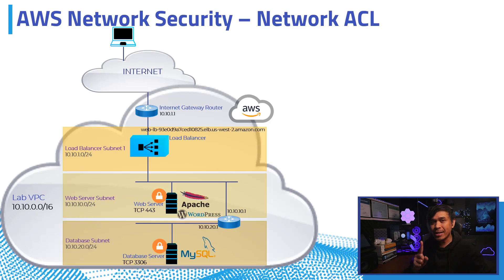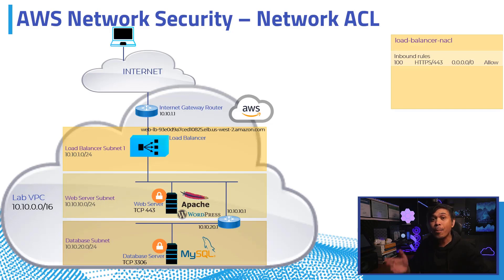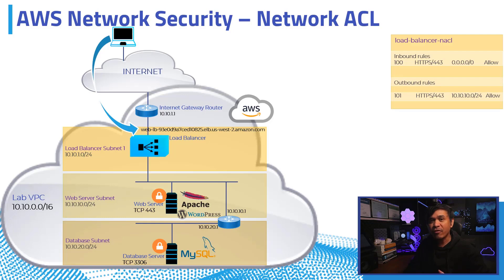The first is the Load Balancer NACL, applied to Load Balancer Subnet 1. We configured inbound rule number 100 to allow HTTPS or TCP port 443 from the internet. Then we configured outbound rule number 101 to allow the forwarding traffic of HTTPS from the load balancer to the web server.